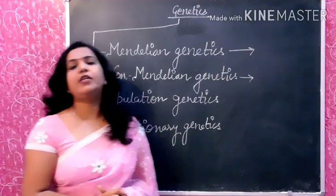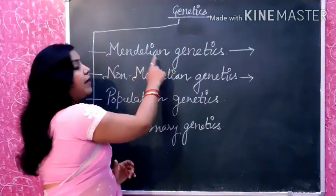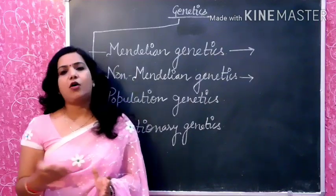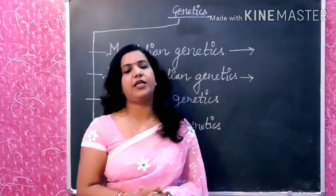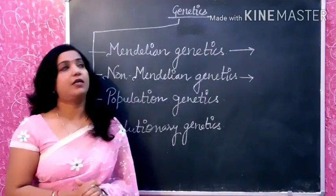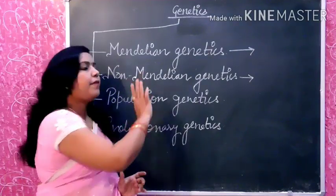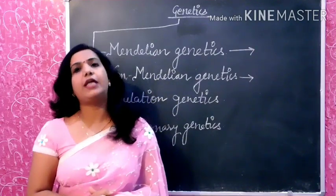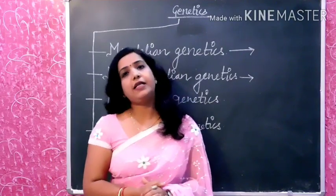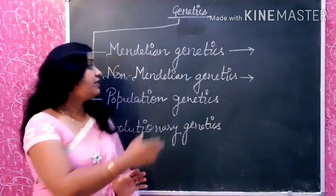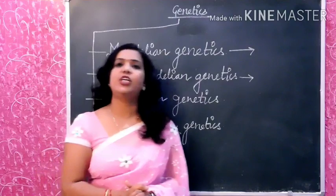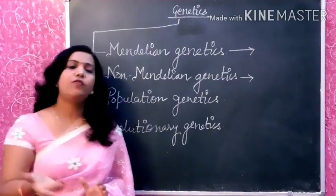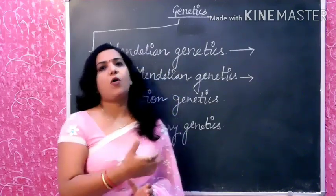What is Mendelian Genetics? There are many cases where Mendel's laws do not follow. Those inheritance patterns which do not follow Mendelian inheritance pattern or Mendelian ratio — these cases are called Non-Mendelian Genetics and are studied under Non-Mendelian Genetics. Then there are Population Genetics and Evolutionary Genetics.